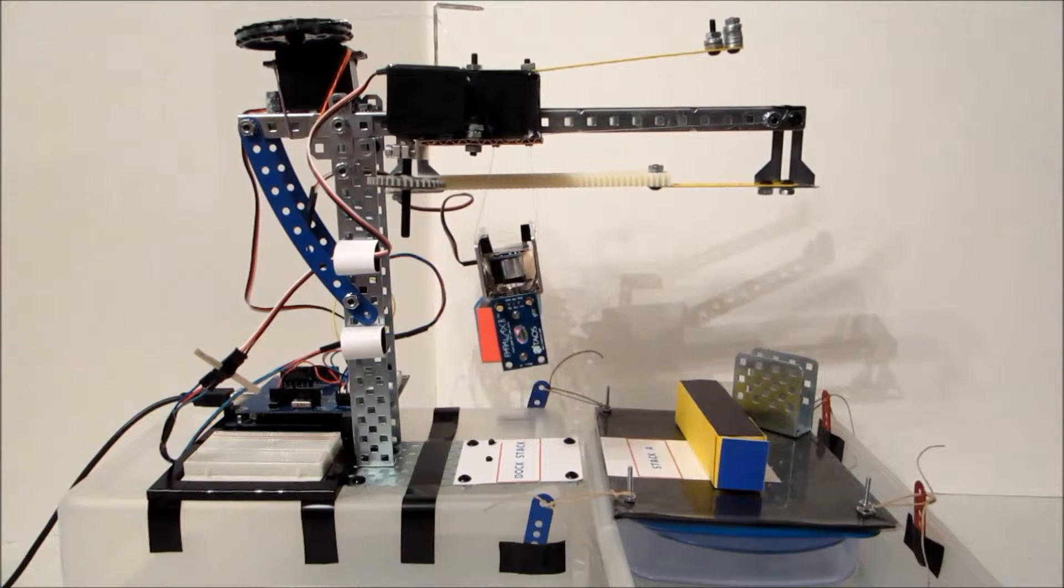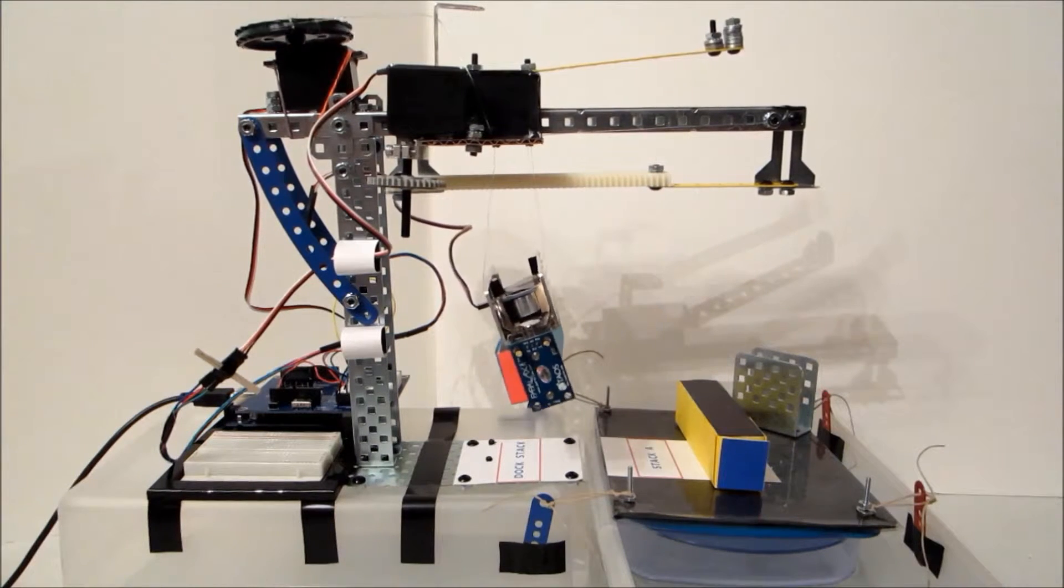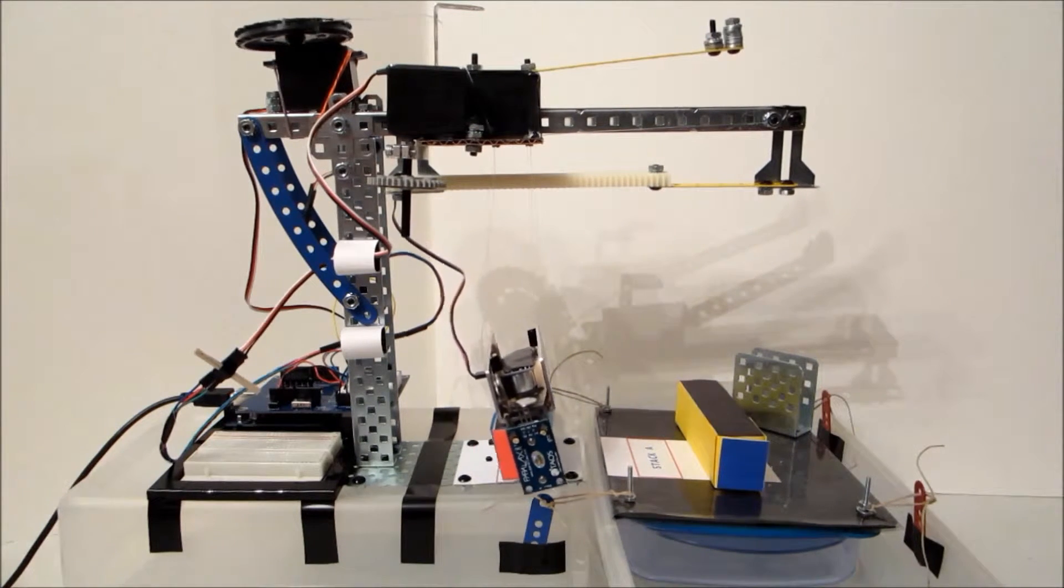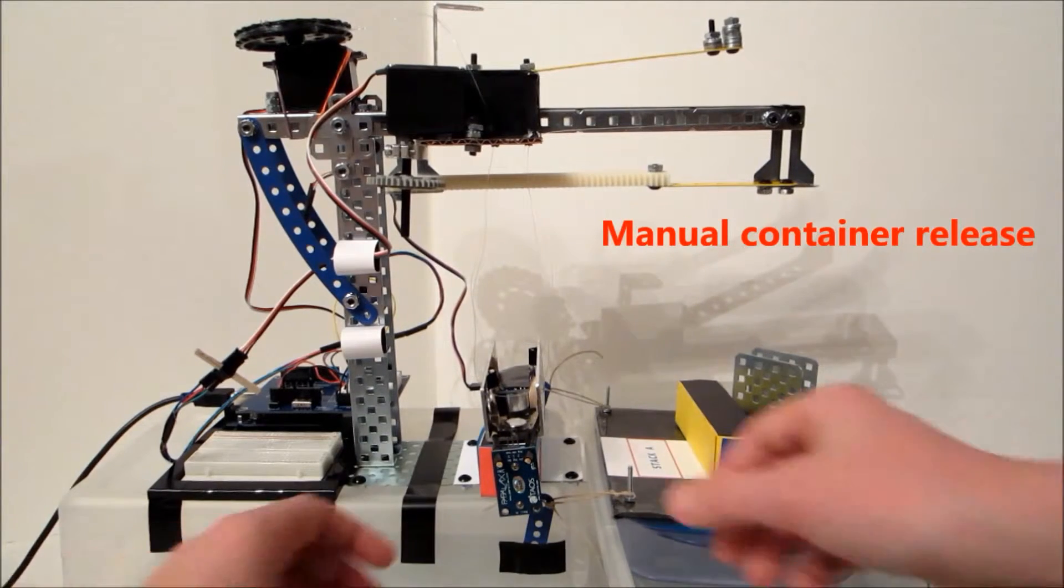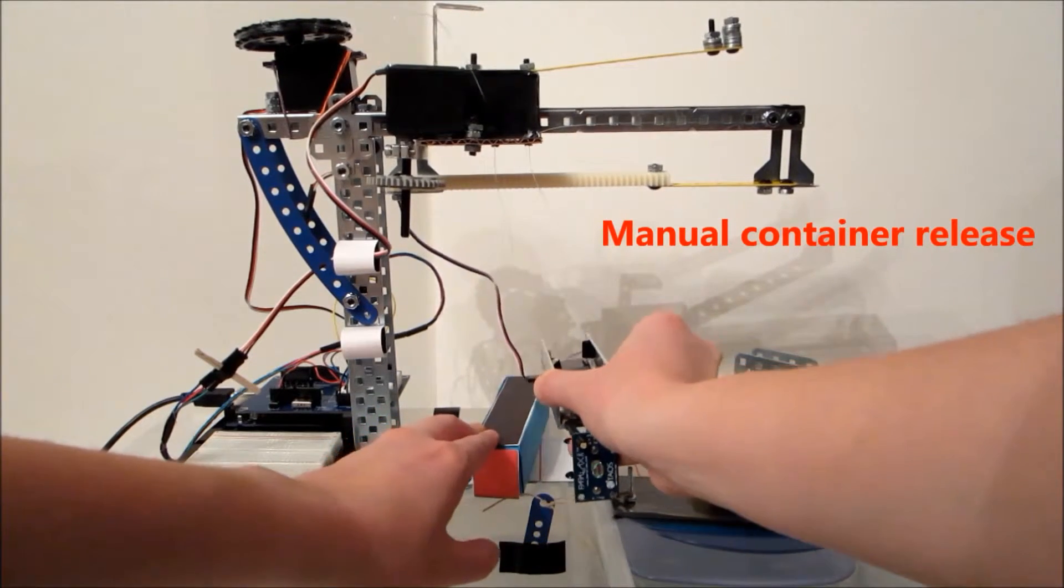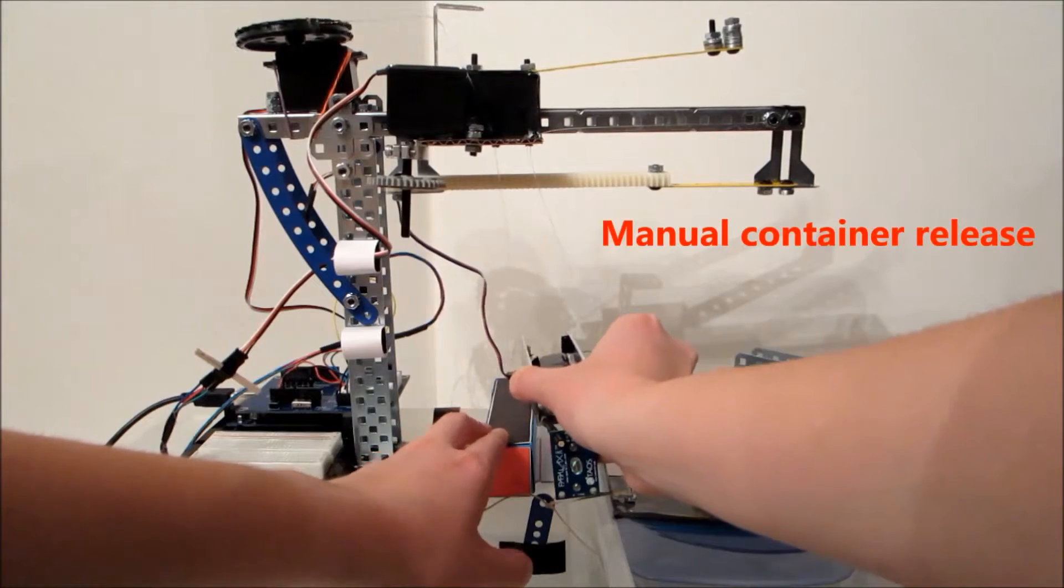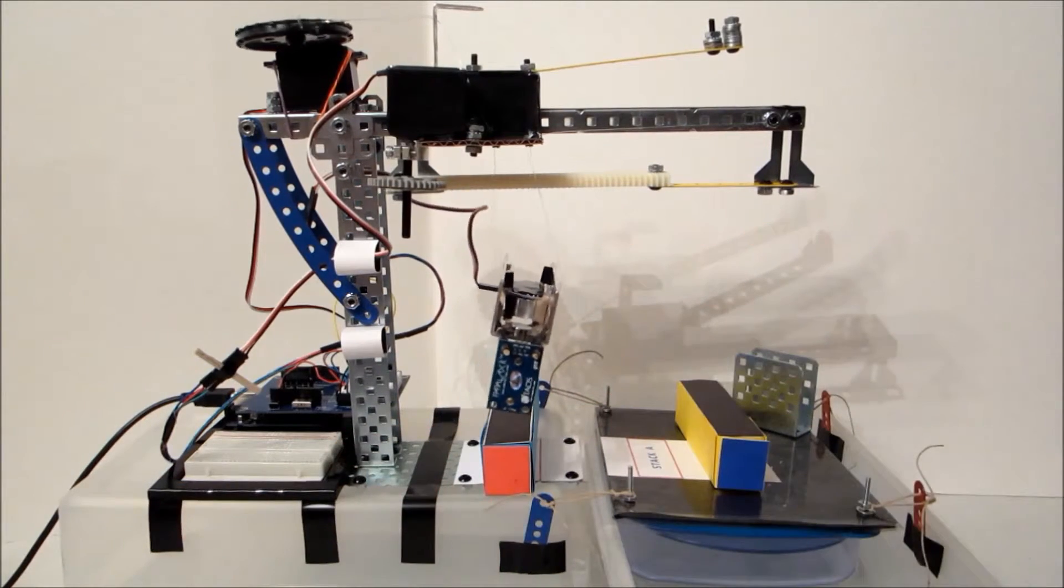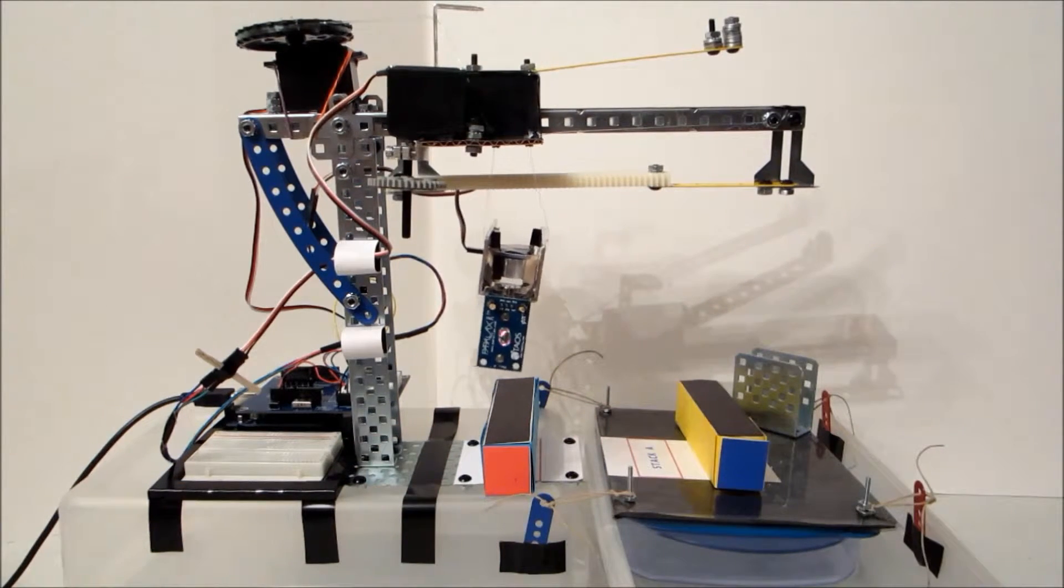The spreader was originally designed to release containers by the activation of electromagnets, which could reverse the magnetic field of the neodymium magnets holding the containers. However, this system worked only sporadically in tests, so the electromagnets were not implemented in the final crane design.